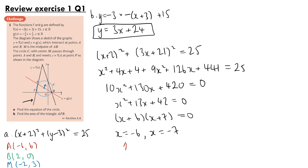We know x equals minus 6 corresponds to point A, so x equals minus 7 must be point P. We can plug this back into y equals 3x plus 24 to find the y-coordinate: 3 times minus 7 plus 24 gives 3. So the coordinates of P are (minus 7, 3).